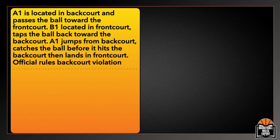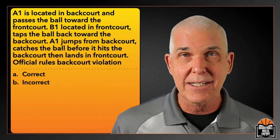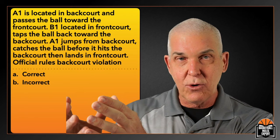Next question: A1 is located in the backcourt and passes the ball towards the frontcourt. B1, located in the frontcourt, taps the ball back towards the backcourt. A1 jumps from the frontcourt, catches the ball before it hits the backcourt, then lands in the frontcourt. The officials rule a backcourt violation — were the officials correct or incorrect? We imagine the scenario: players have team control on the court, throw the ball towards the frontcourt, the defensive team contacts the basketball and knocks it back, then a teammate jumps and catches the ball in the air and lands in the frontcourt.